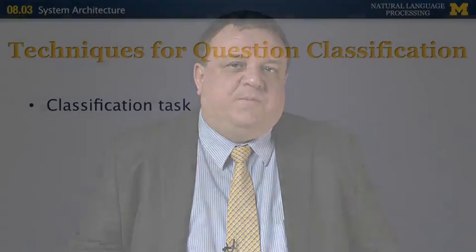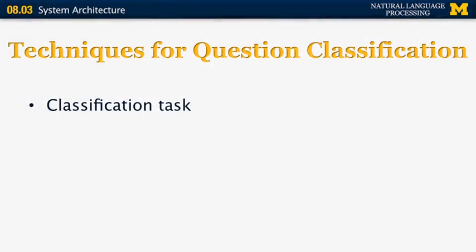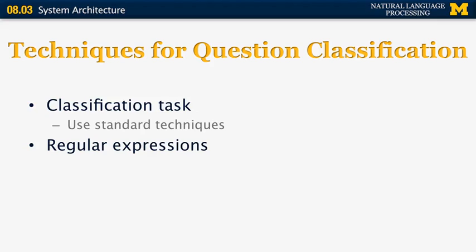We discussed one of the most important problems in question answering, specifically question classification. Now let's look at some of the specific techniques used for question classification. As the name indicates, question classification is just a classification task — the standard machine learning task — so it's possible to use very standard techniques, for instance SVMs and Naive Bayesian techniques.